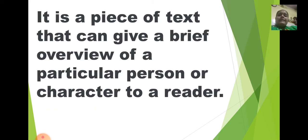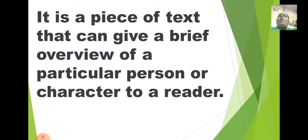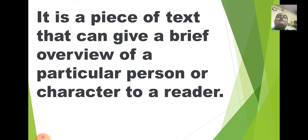It is a piece of text that gives a brief overview of a particular person or character to a reader. A piece of text means few lines or few sentences are written about the character in detail — about its looks, about what does it wear, how does it look, what does it like to eat or what does it like to do. All the small details about that particular character are written. So it is written in sentences, or you can say a small paragraph is made about that character.